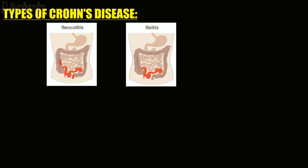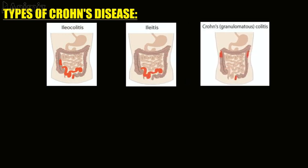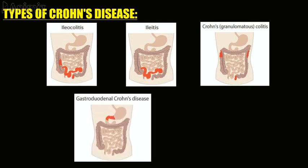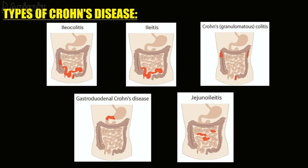Crohn's colitis, also known as granulomatous colitis, is a form of the disease that affects only the colon. Gastroduodenal Crohn's disease affects both the stomach and the beginning of the small intestine. Jejunoileitis is a form of Crohn's disease that involves patches of inflammation in the upper half of the small intestine.